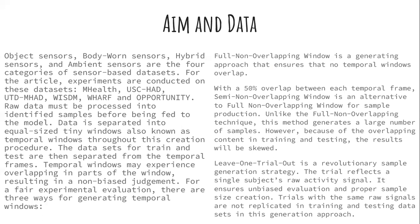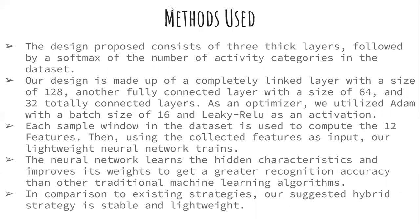The proposed model design consists of three hidden layers followed by a softmax activation function applied to the number of activity categories in the dataset. The architecture uses fully connected layers with sizes of 128, 64, and 32 nodes in decreasing pattern. The Adam optimizer is used with a batch size of 16, and trials with the same raw signals are not replicated across training and testing datasets.